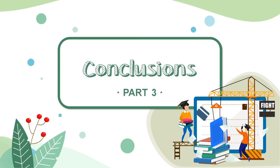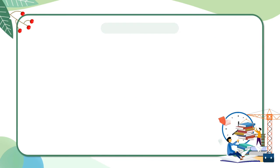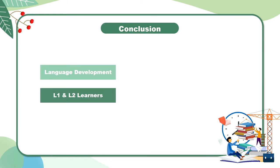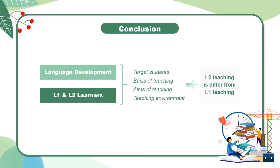Now we could draw conclusions. Based on the distinctions in prior parts, we may find that the differences between first and second language teaching lay in target student, basis of teaching, aims of teaching, and teaching environment.